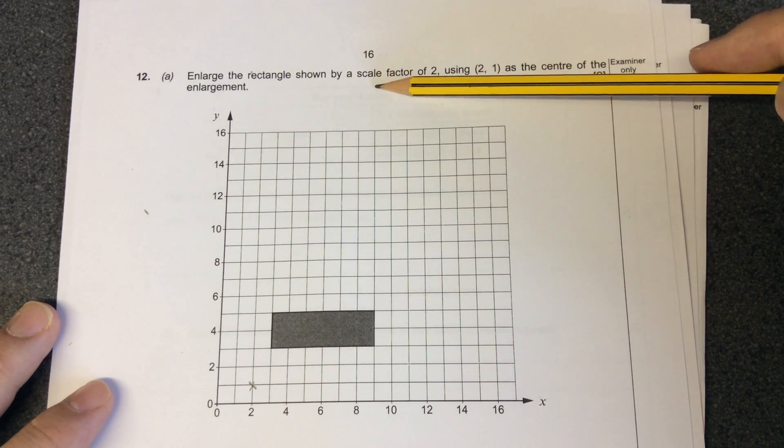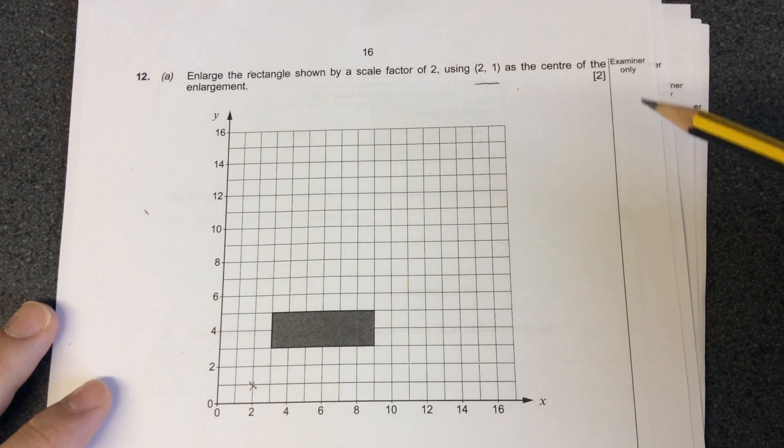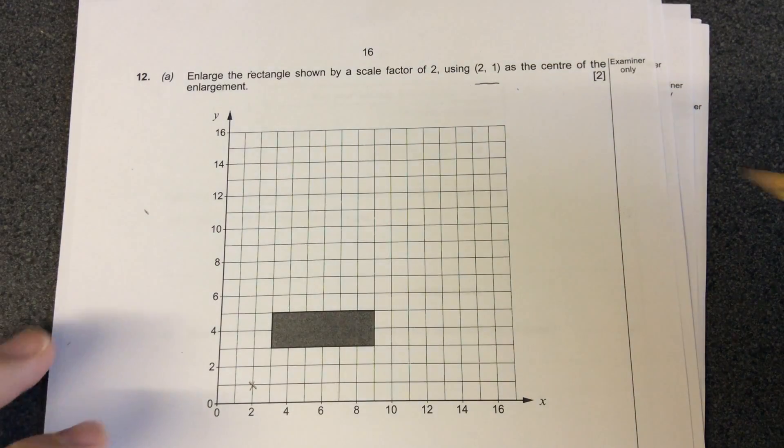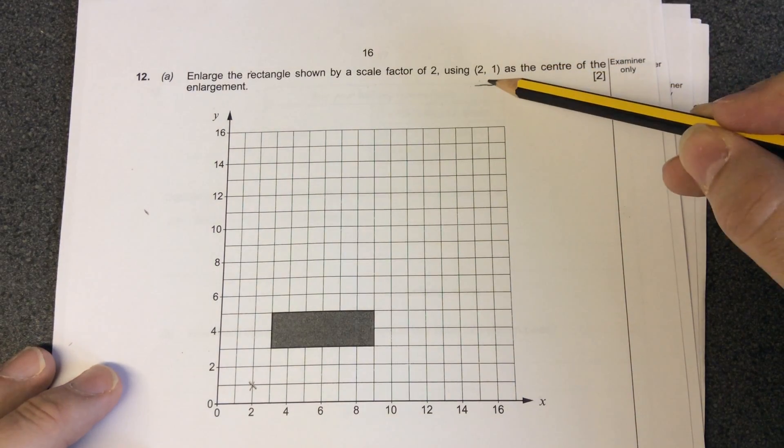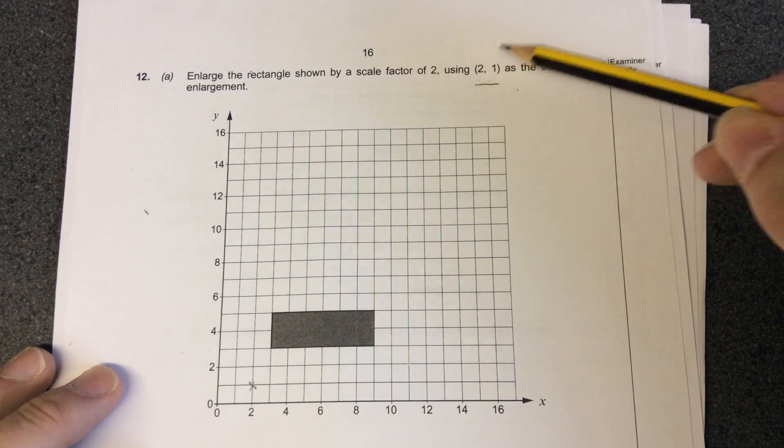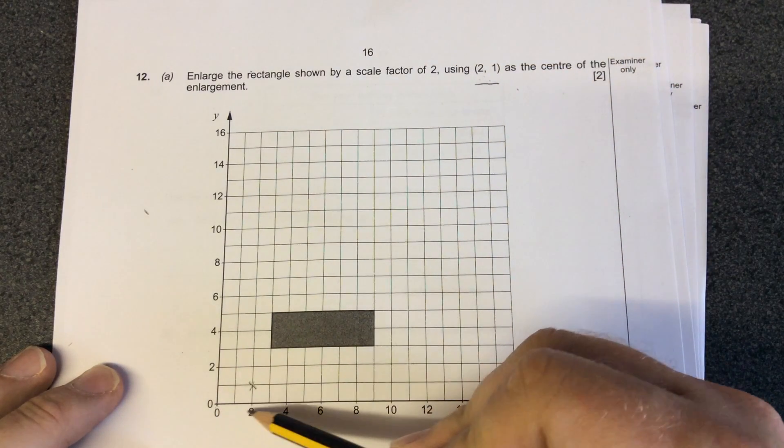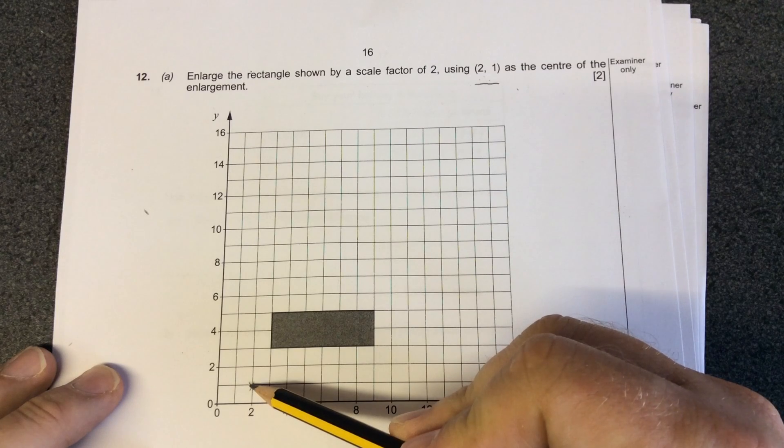When we're enlarging it by a scale factor 2, the diagram stretches out and becomes double the size. We use the coordinate 2, 1 as a center of enlargement. Coordinate means across from the origin, across 2, up 1. This is the center of enlargement.